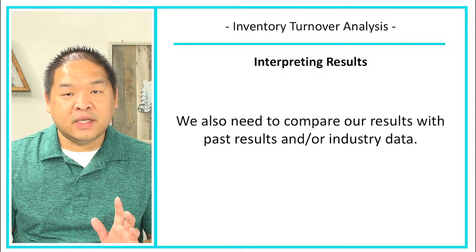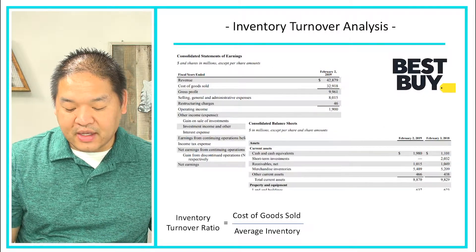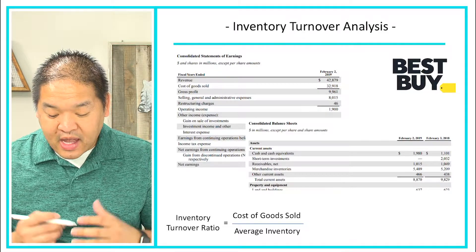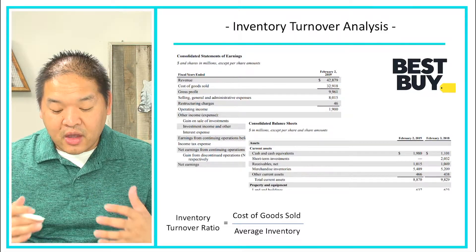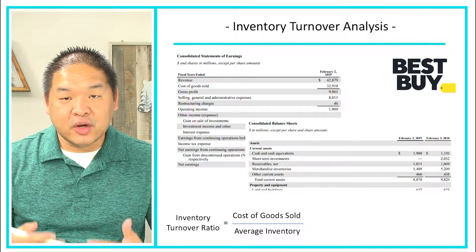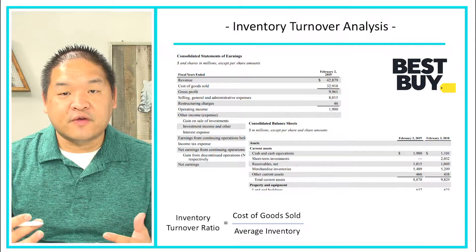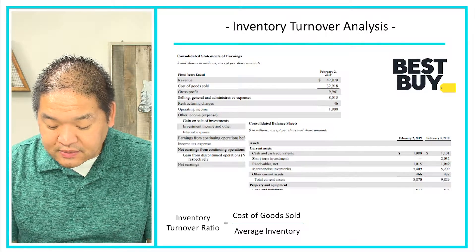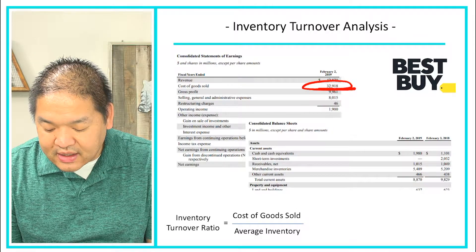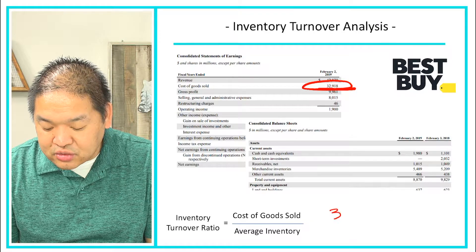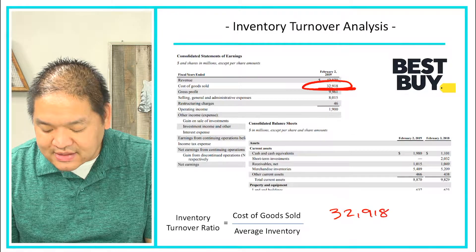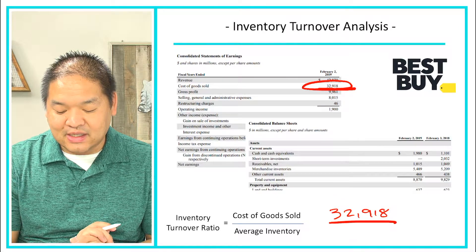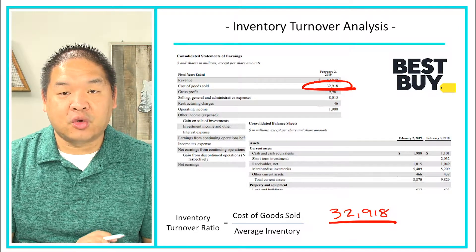Now let's apply this to our company, Best Buy. These are the actual financial statements for Best Buy. The first thing we need is the cost of goods sold. Looking at their income statement, cost of goods sold is $32,918,000,000.